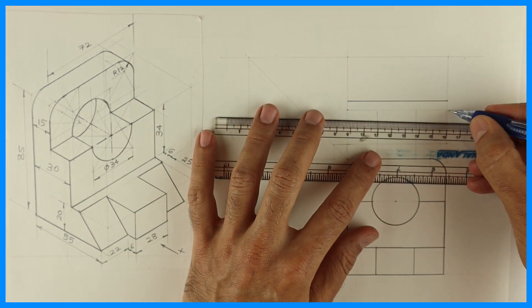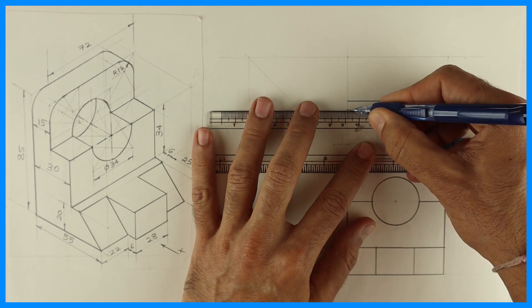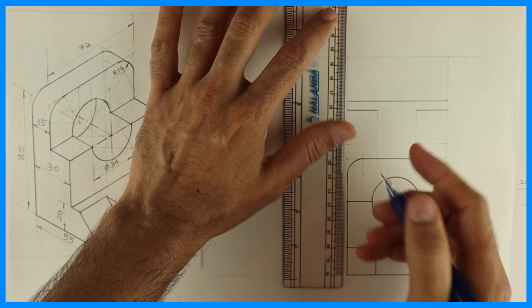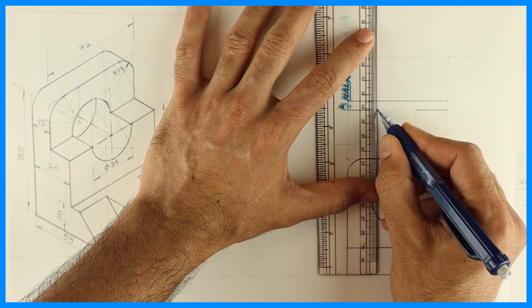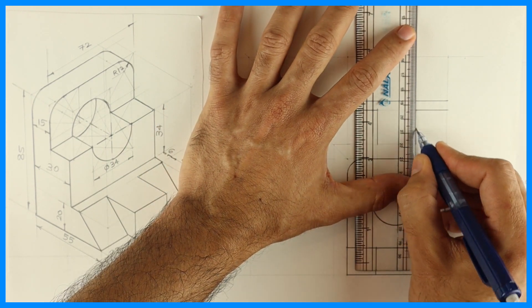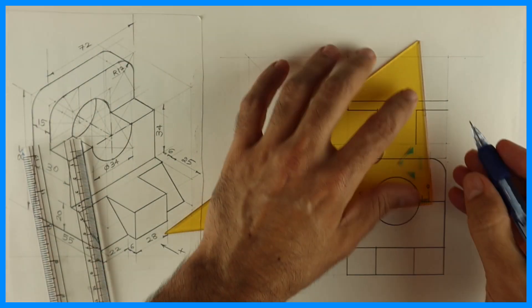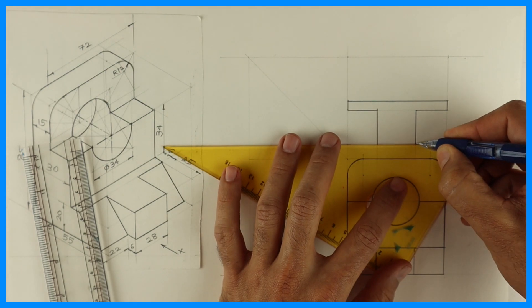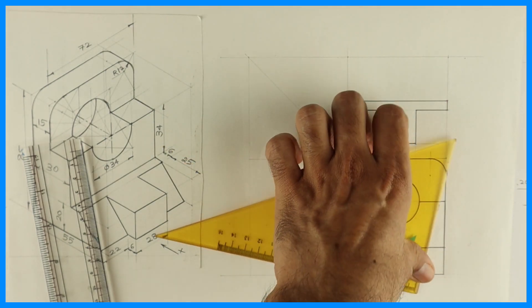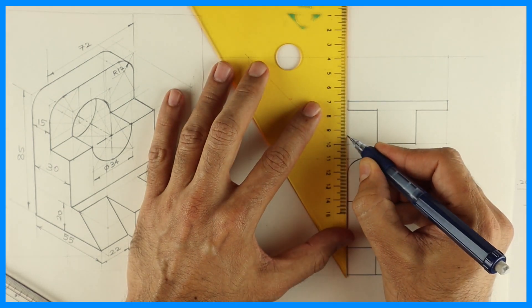So this line will be dark, this will be dark. Only 22 from both the sides. Then you have to come down by 25. See this. So you take six from here.